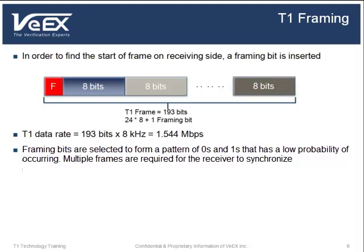The receiver must be able to detect the framing bits in order to synchronize. The framing bits were selected to form a sequence of zeros and ones over several frames. The bit sequence selected for the framing pattern is chosen to have a low probability of occurring, and therefore a low probability of being mistaken in the data payload. Once the framing bit is found, the beginning of each 193-bit frame is known, and synchronization is achieved.